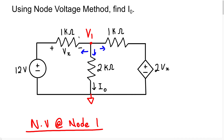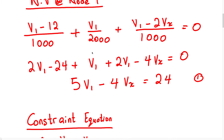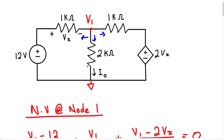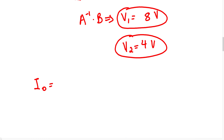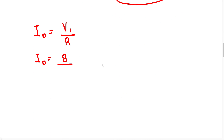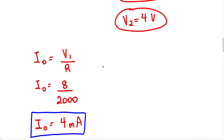Now the question wanted us to find the current I_O, which is the current flowing through this 2K resistor. We know the voltage at node 1 is 8 volts. To find I_O, we can just use Ohm's law: I_O equals V1 over R, which is 8 divided by 2000. Therefore, the current I_O equals 4 milliamps. So the current flowing through this 2K resistor is 4 milliamps.